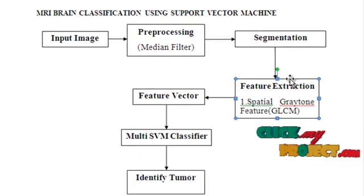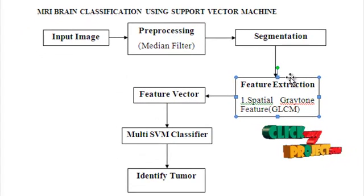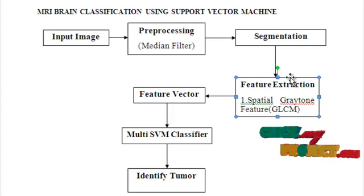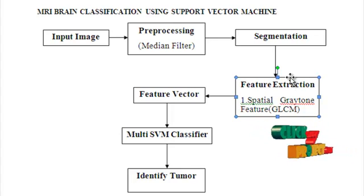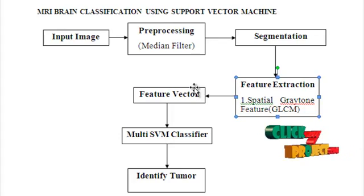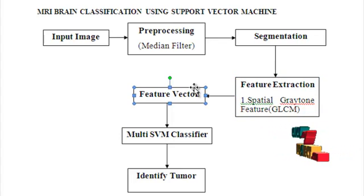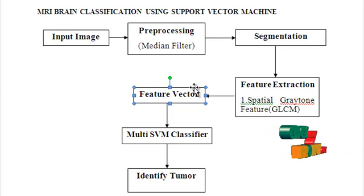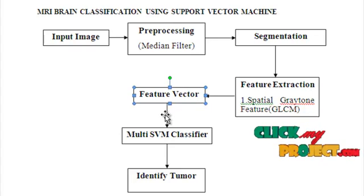Following this, the feature extraction is based on the construction of the gray level co-occurrence matrix. GLCM is defined by first specifying a displacement vector D and counting all pairs of pixels separated by D having gray levels I and G. The computed features are arranged in the form of a 1 × N vector, where N represents the total number of features extracted from the constructed co-occurrence matrix. This is now called the feature vector.